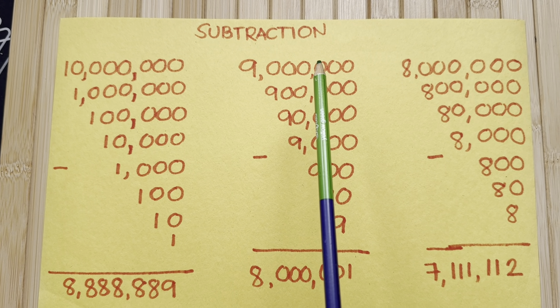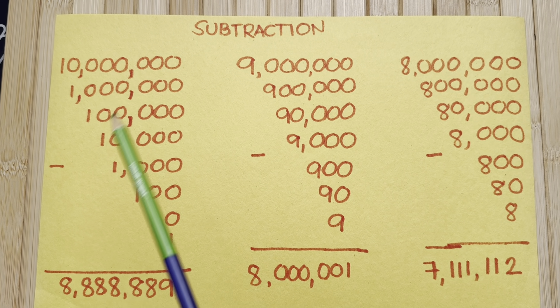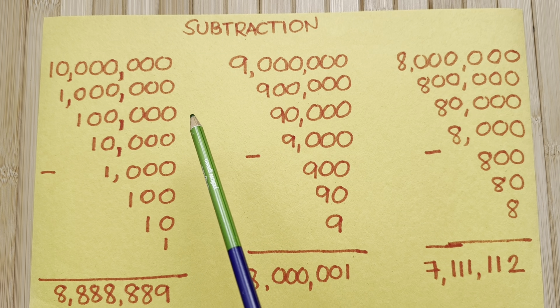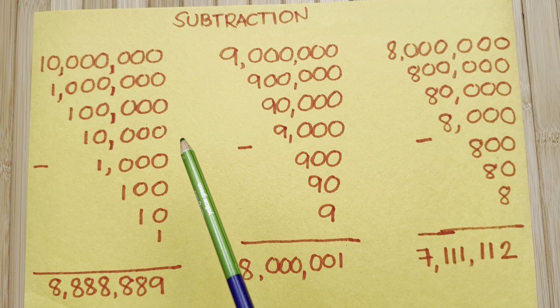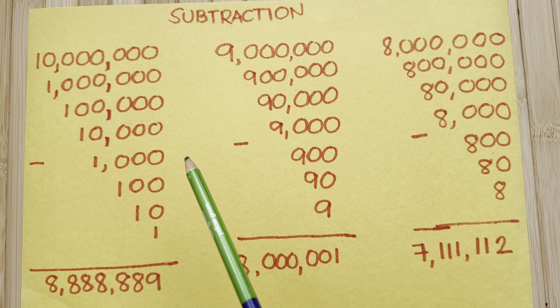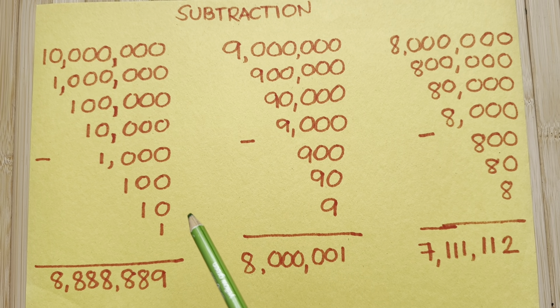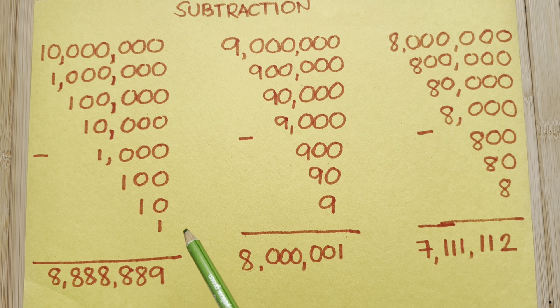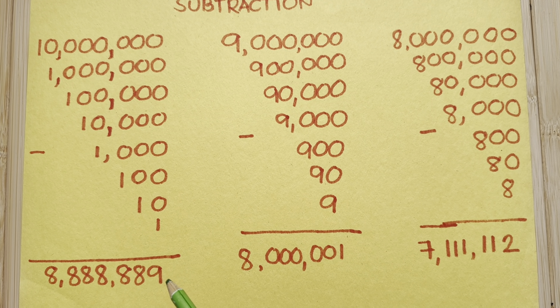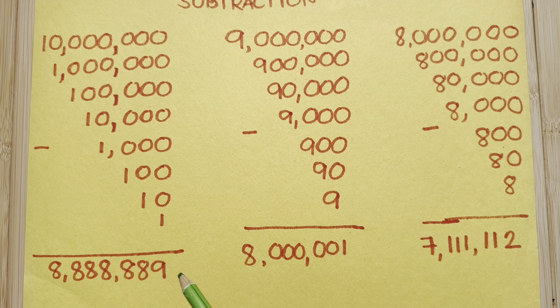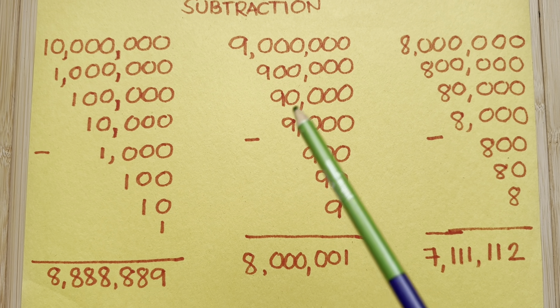Subtraction. 10 million minus 1 million minus 100,000 minus 10,000 minus 1,000 minus 100 minus 10 minus 1 equals 8,888,889.